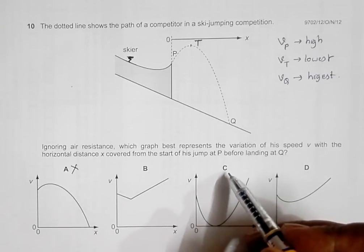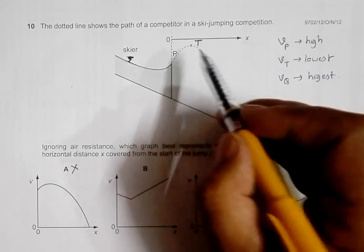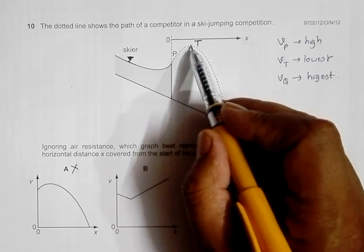Another choice that we can avoid is choice number C because it says that at the highest point the velocity is zero. So what actually happens here is the vertical velocity is zero but the horizontal is not, so that's why this is also not possible.